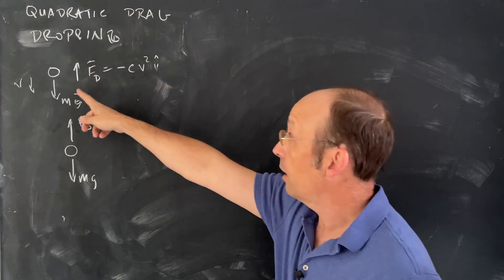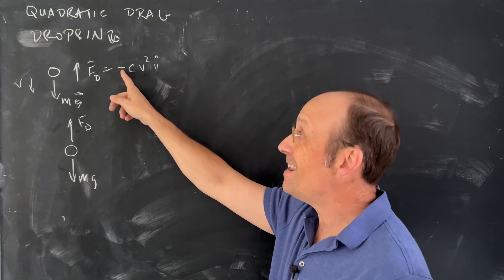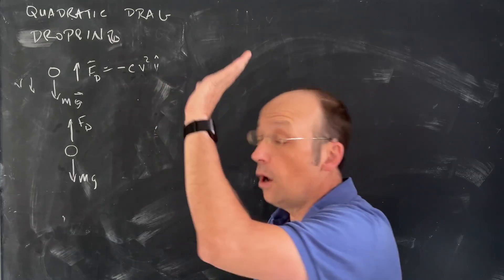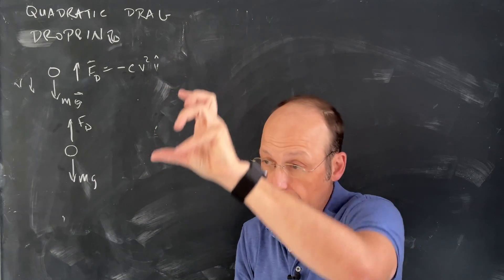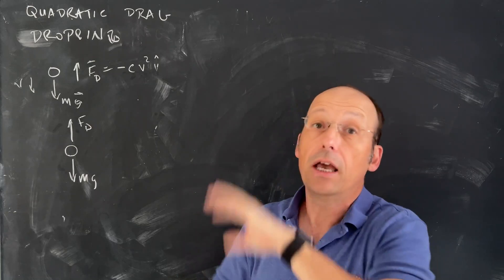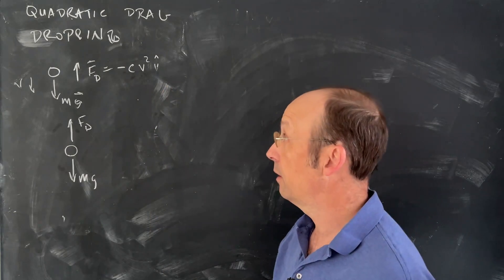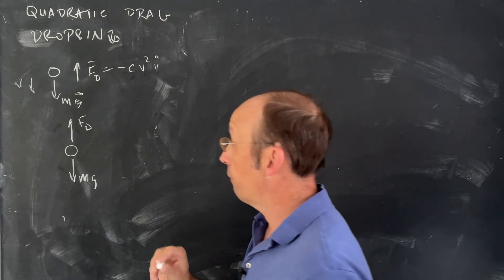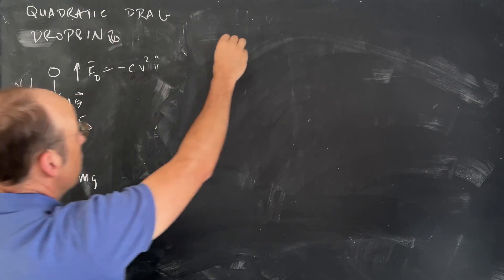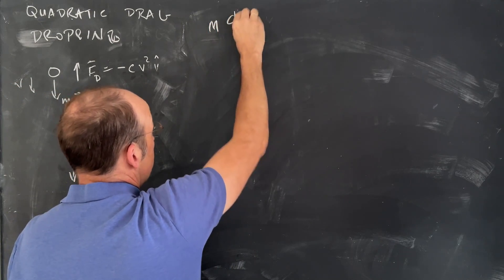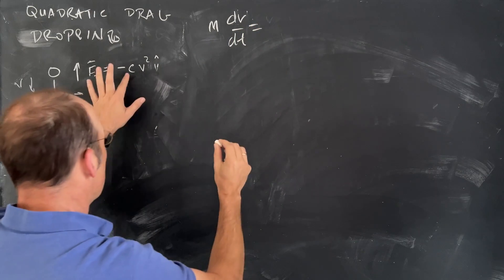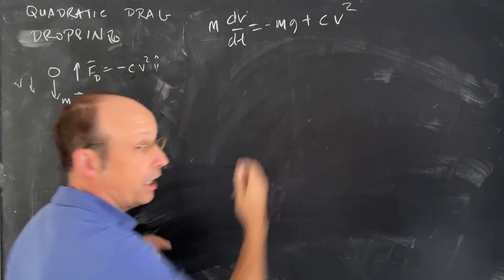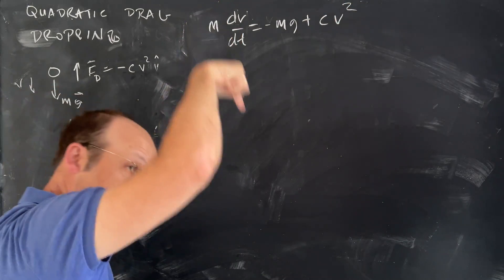So here's our drag force. Remember, the negative is there. If you put the negative there and you want to write it as a vector, you're going to need that unit vector v-hat. But we're going to be dealing with just dropping, so it's only going to be moving in the negative y direction, and that makes it a little bit easier. So let's write down the equation of motion — Newton's second law — for this case. I have mass times acceleration, which is dv/dt, and that's going to be equal to the gravitational force, negative mg, plus cv squared. It's plus because the drag force is up because the object is falling down.